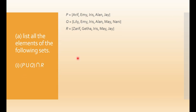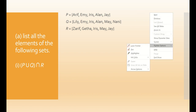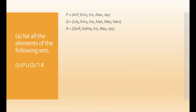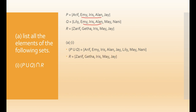P union Q means you list out all the elements in set P and set Q, but repeated elements are not written down twice. So elements like Amy, Iris, and Ellen are written only once. Then for set R, you copy it down. The intersection between set R and P union Q gives the common elements: Iris, May, and J. So the answer for P union Q intersect R equals Iris, J, and May.